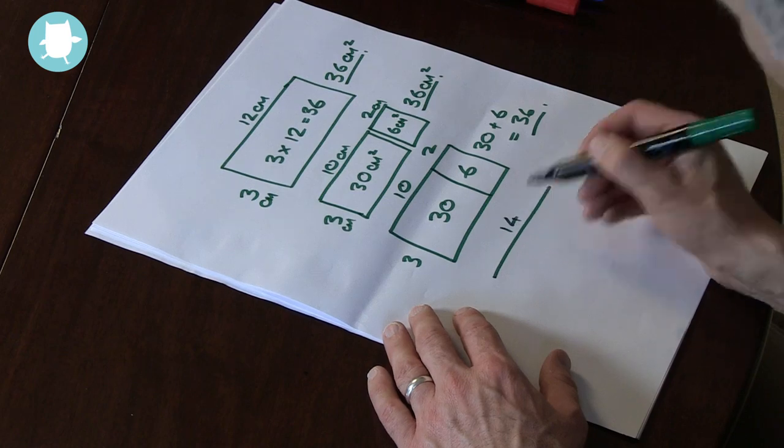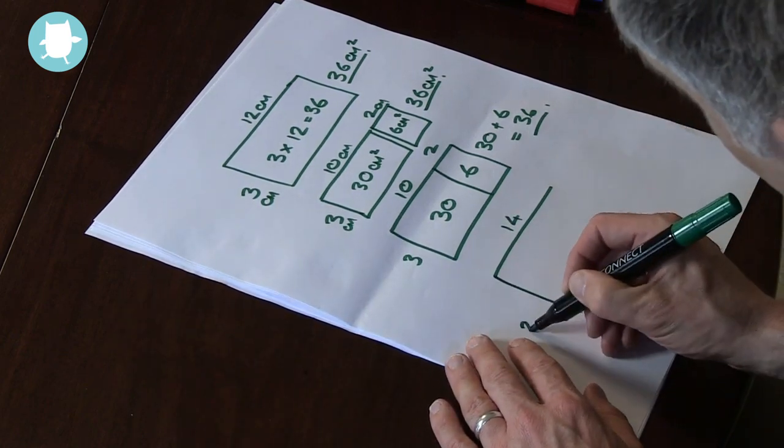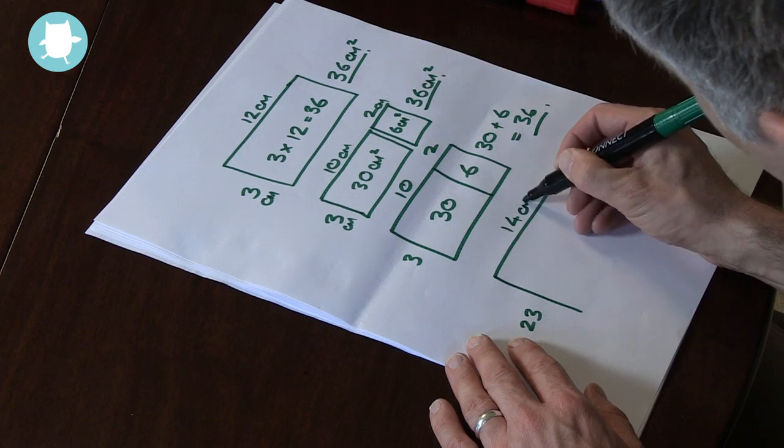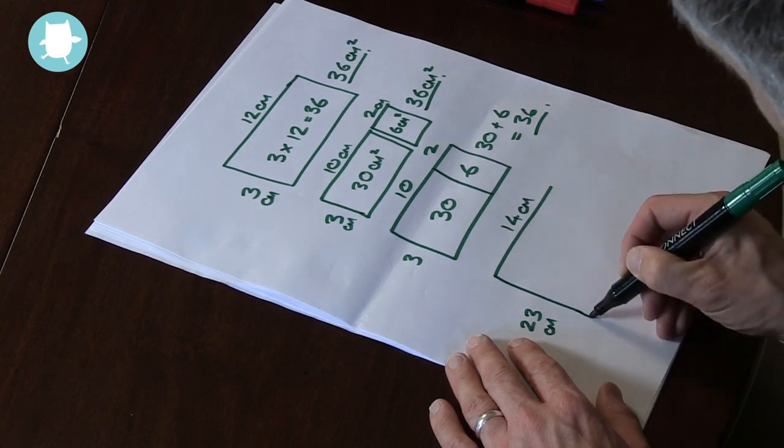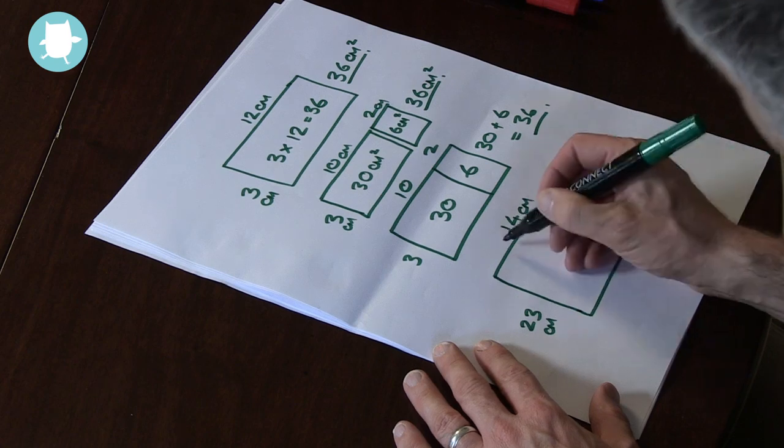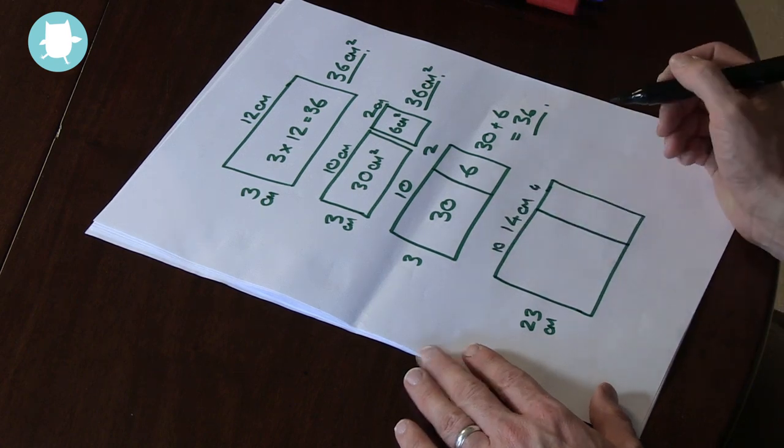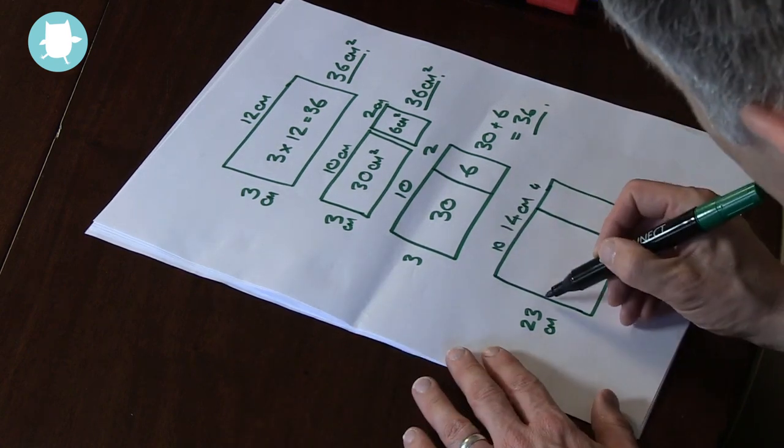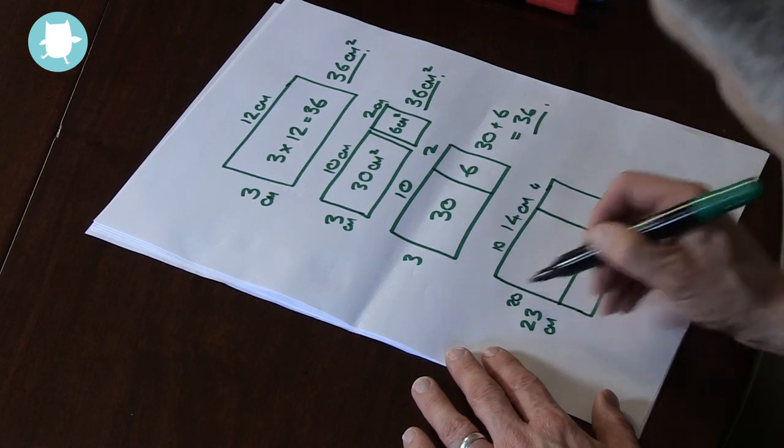Suppose our rectangle is now 14 centimeters by 23 centimeters. This time we have to break down both lengths. We break 14 into 10 and 4, and we break 23 into 20 and 3.